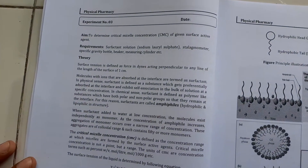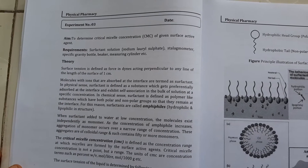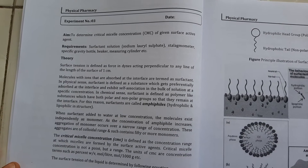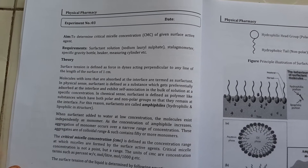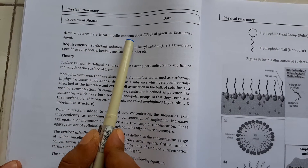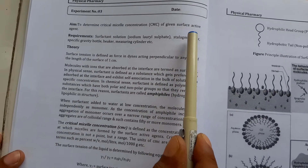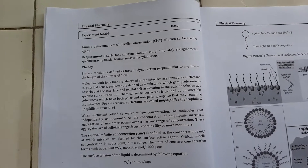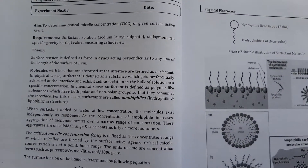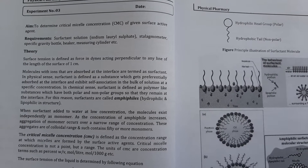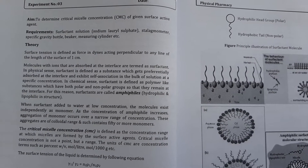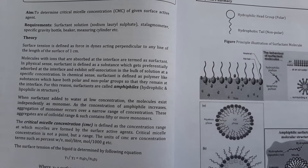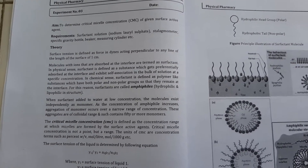Hello students, today we will perform a new practical: determination of CMC, critical micelle concentration of a given surface active agent. Our aim is to determine the critical micelle concentration, that means CMC, of a given surface active agent. Before going to the practical, first you have to know what is CMC and what is a surfactant. I will give you an overview of how to determine CMC, that means critical micelle concentration.